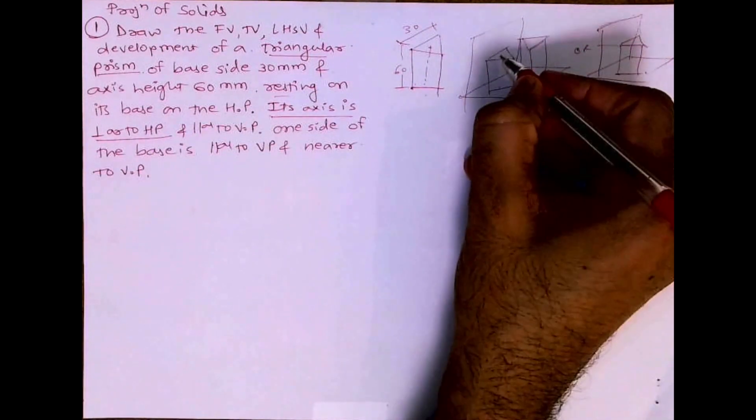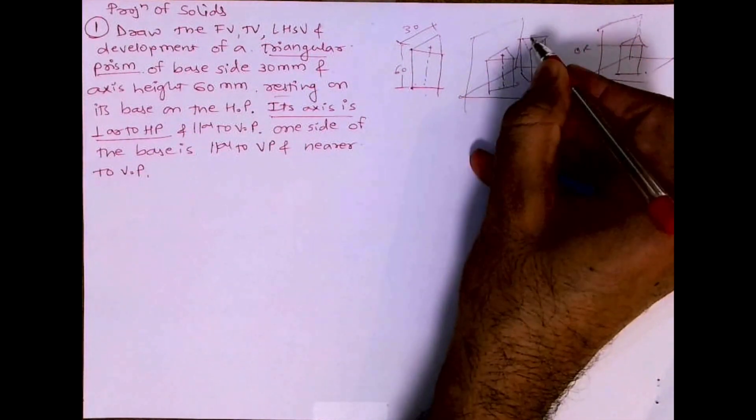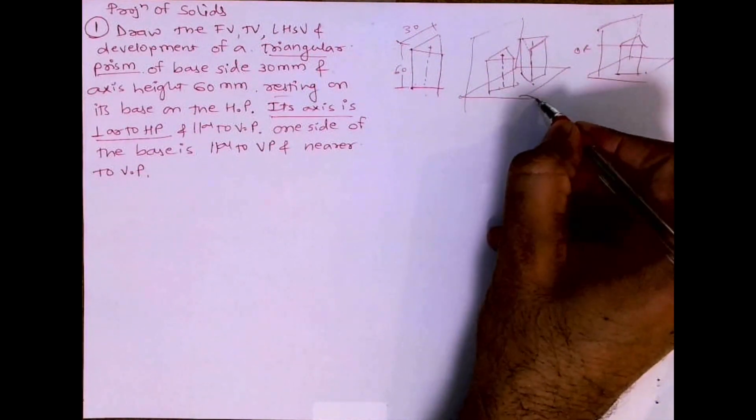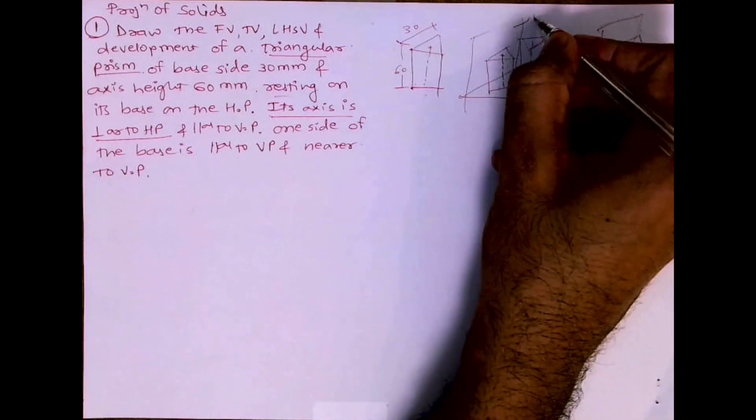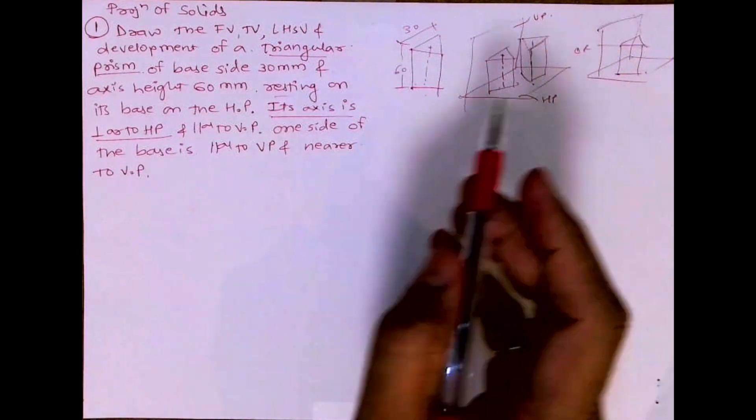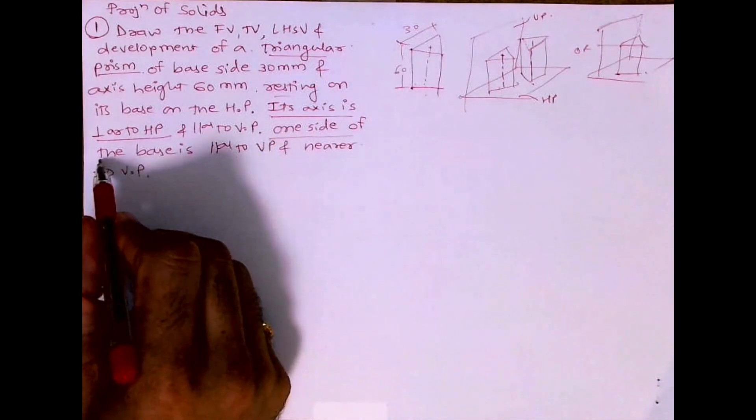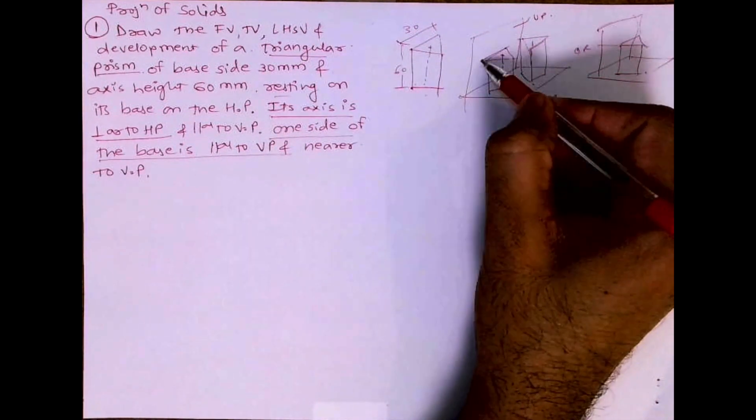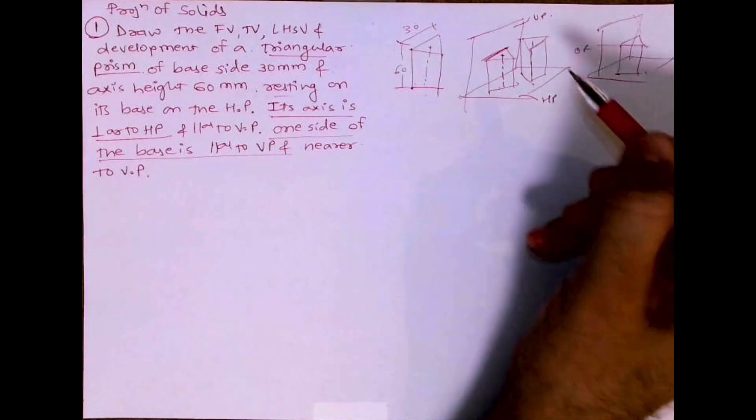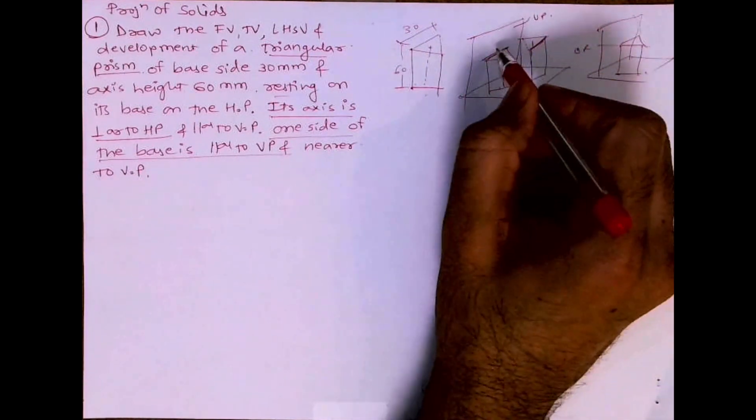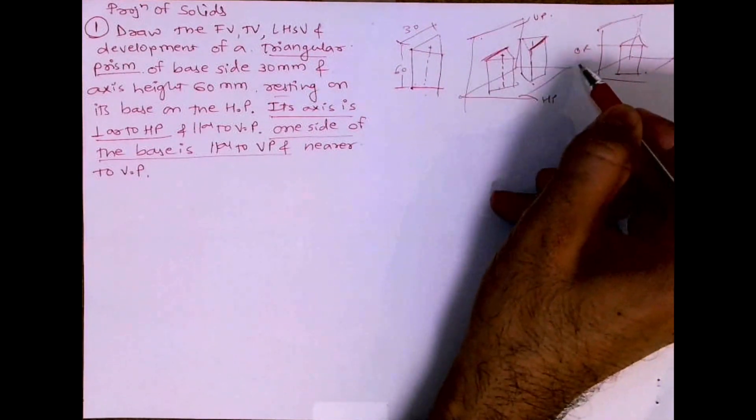Its axis is perpendicular to HP everywhere. Axis is perpendicular to HP, so that condition is satisfied. This is HP, this is VP. One side of the base is parallel to VP. See this, this is parallel to VP, vertical plane parallel. This is also parallel, so out of these two which one is correct one we don't know.